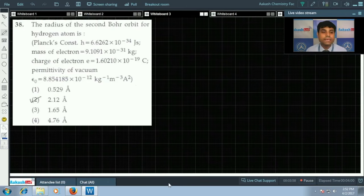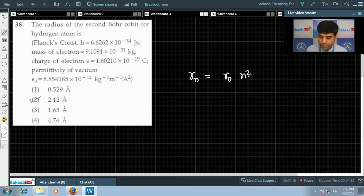Question number 38 says the radius of the second Bohr's orbit of hydrogen atom is. Here different constants are given, but we can apply shortcut method and the formula: radius of nth orbit is equals to r naught into n square by z, where n is the orbit number, z is atomic number, r naught is the radius of first orbit which is 0.529 angstrom.